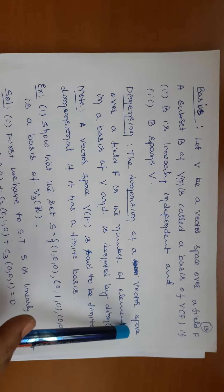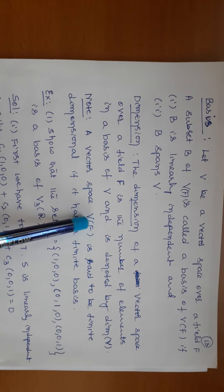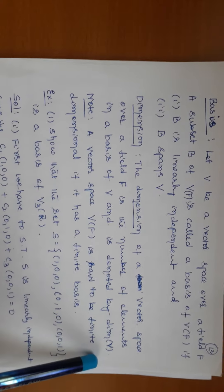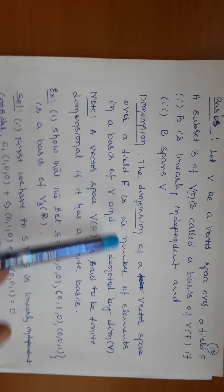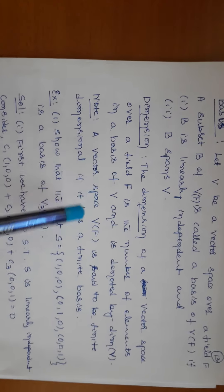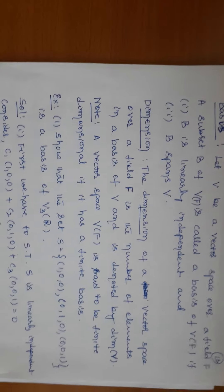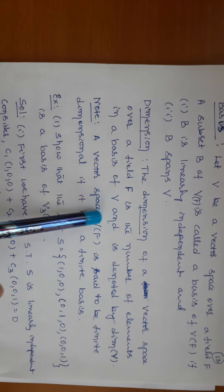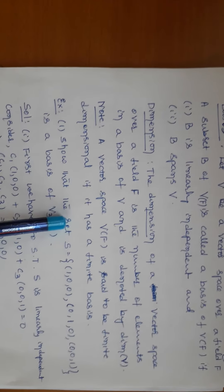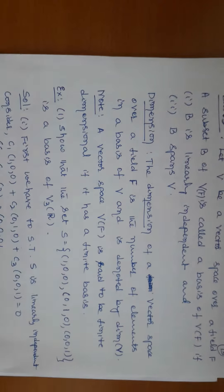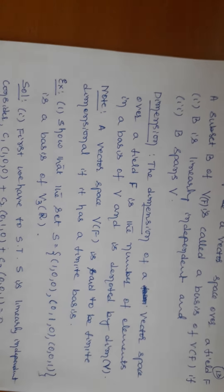The dimension of a vector space V over a field F is the number of elements in a basis of the vector space over F, and is denoted by dim(V). How many vectors we have in the basis — that gives the dimension of the vector space. A vector space V over F is said to be finite dimensional if it has a finite basis.